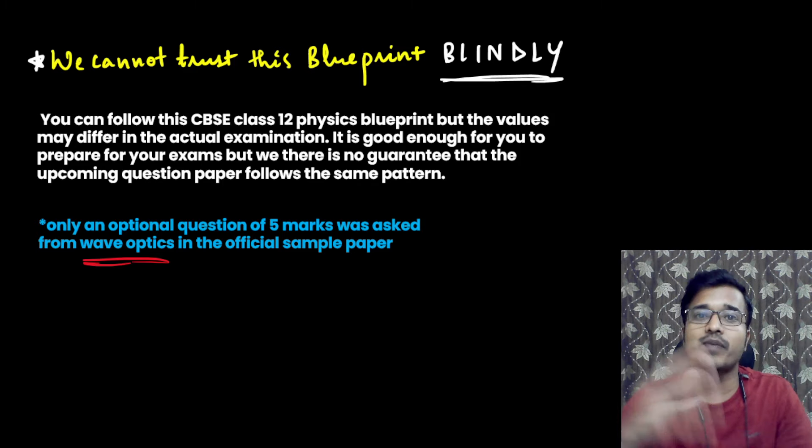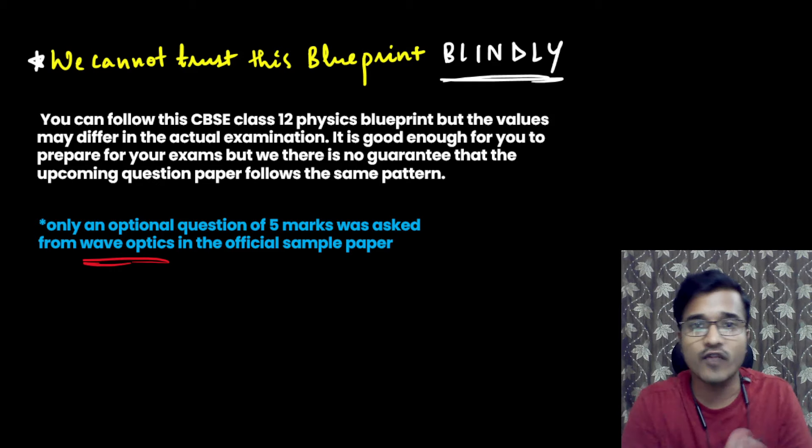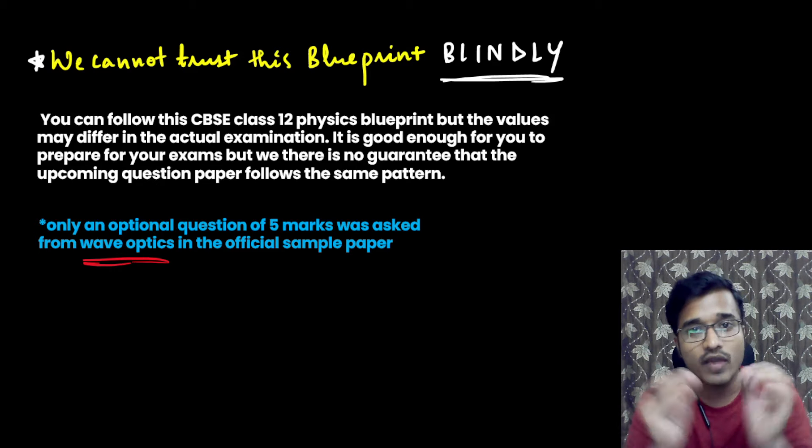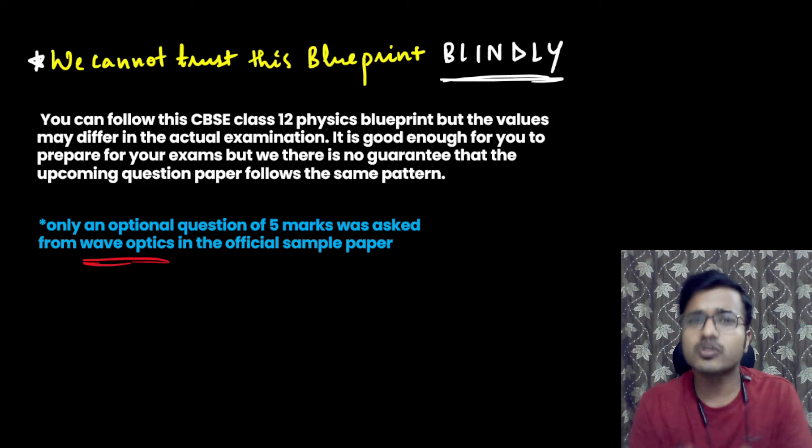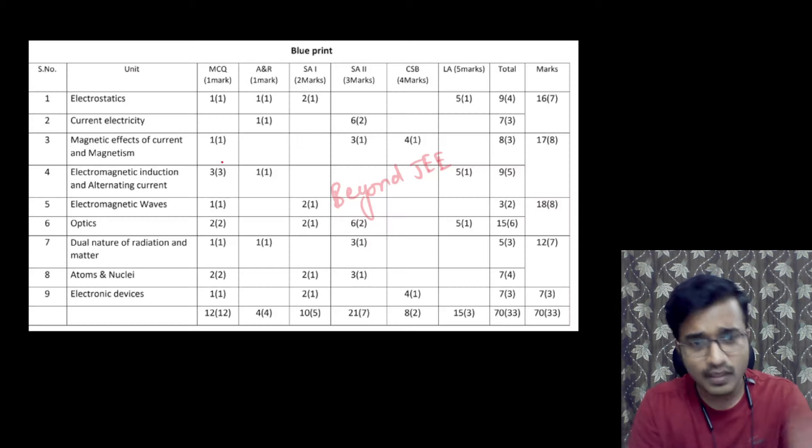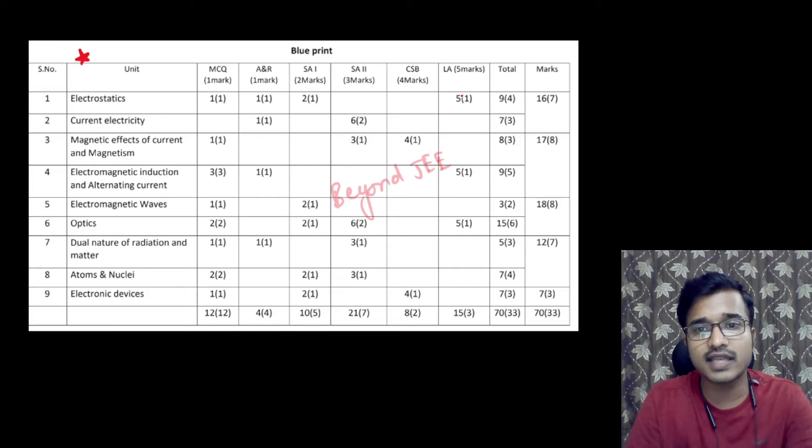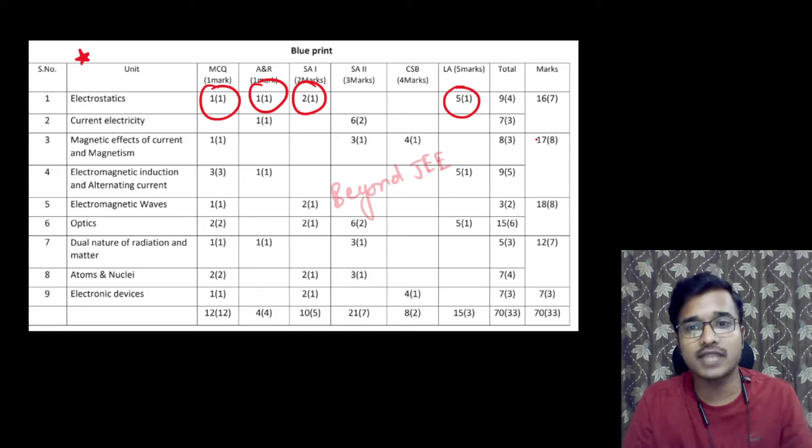And on that basis, there are also three papers that we have provided. If you practice them, then all the patterns in your mind will be clear. And you can see a good score in the paper. So if we see the blueprint here, then you can see in the electrostatics, like you have a long answer, short answer, one question is assertion reasoning and one question is MCQ. So it is made of 9 marks here.